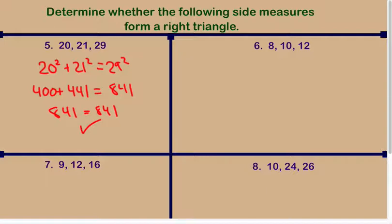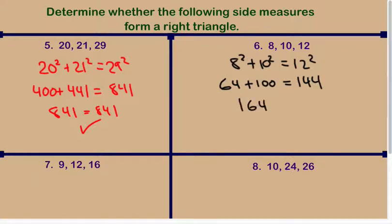Number six, and you might want to try a couple of these on your own so you can hit pause and try and see what you get. So, 64 plus 100, 12 squared is 144. I do not have a good feeling about this one. No, that one does not work.